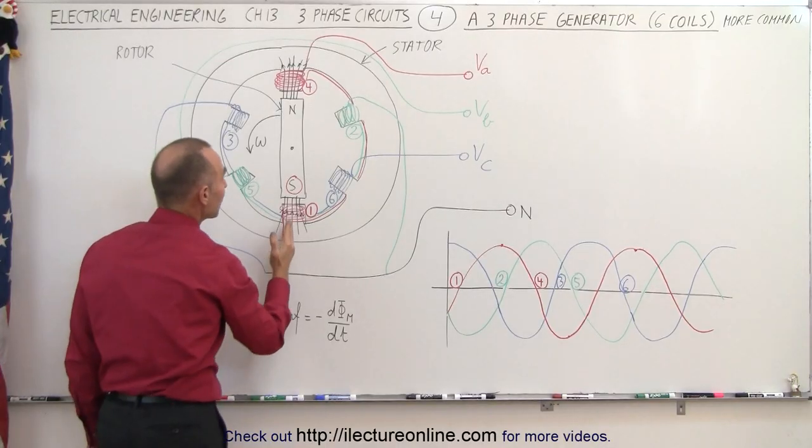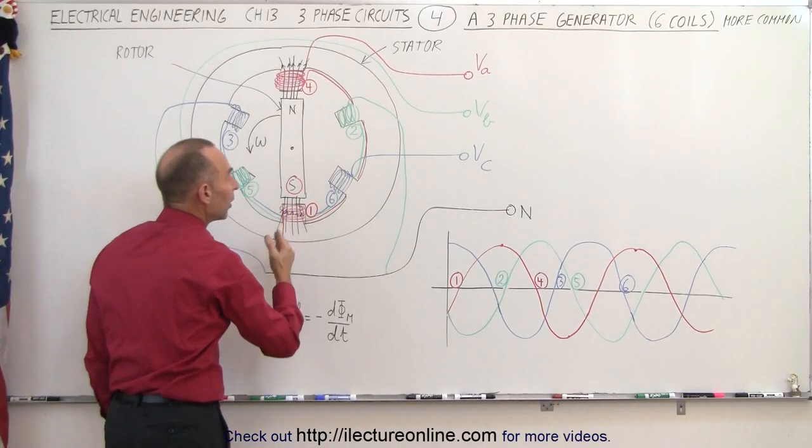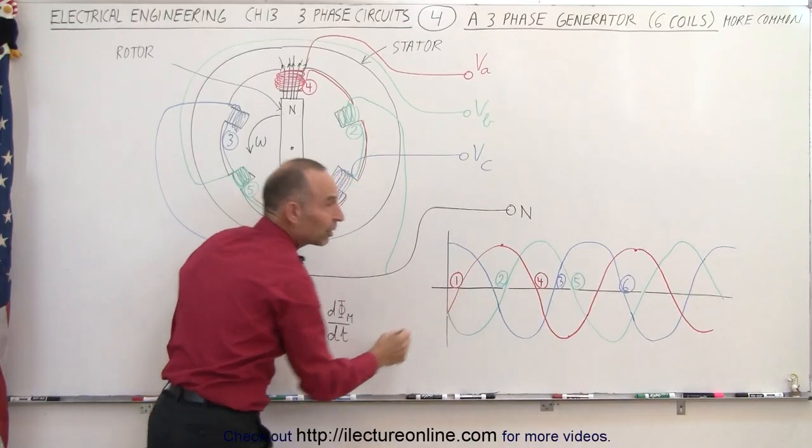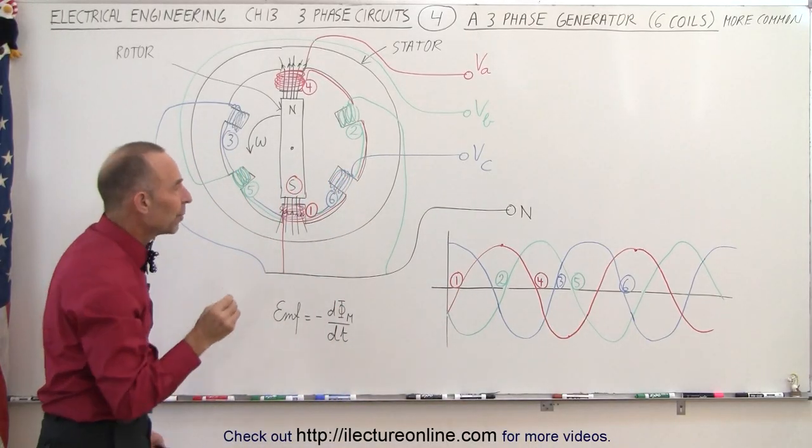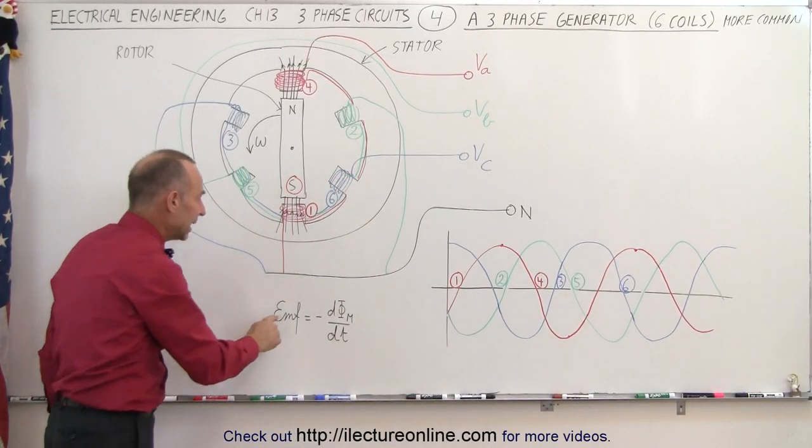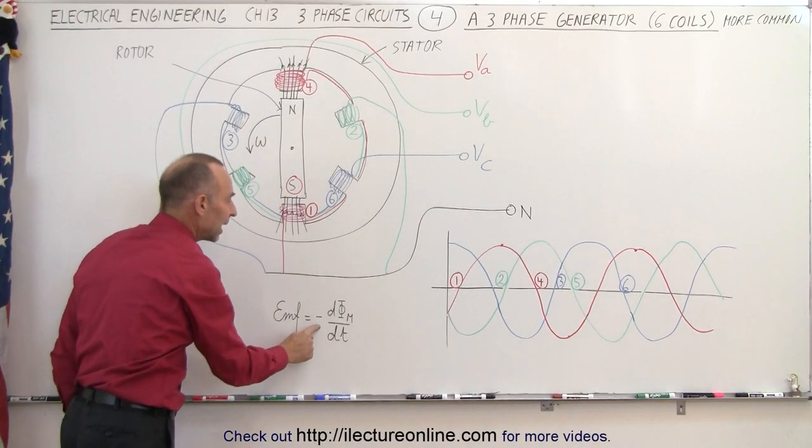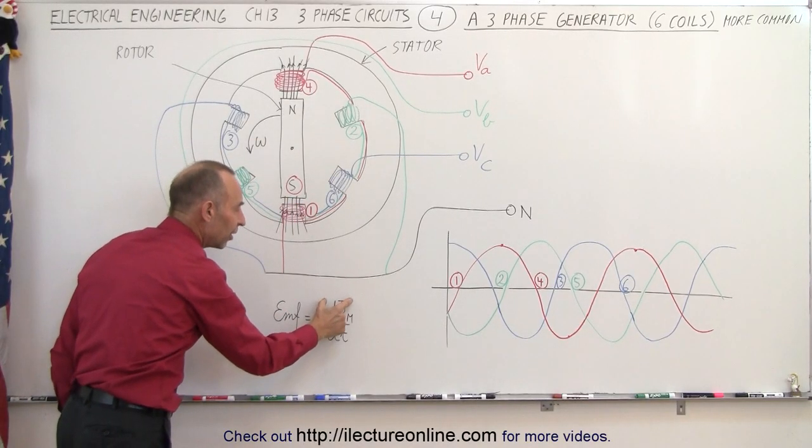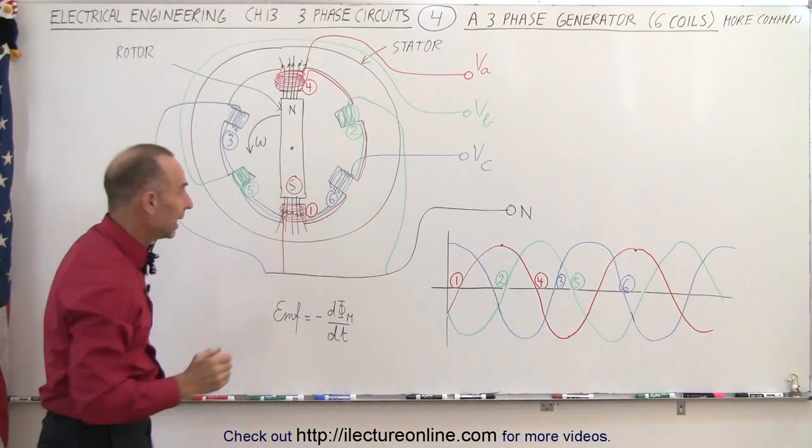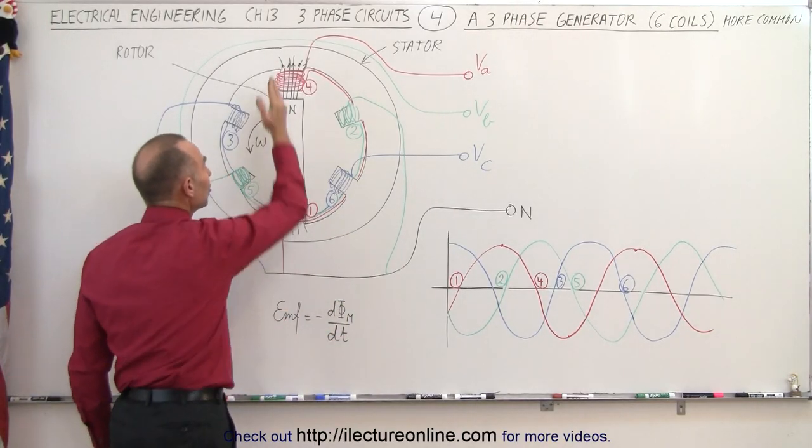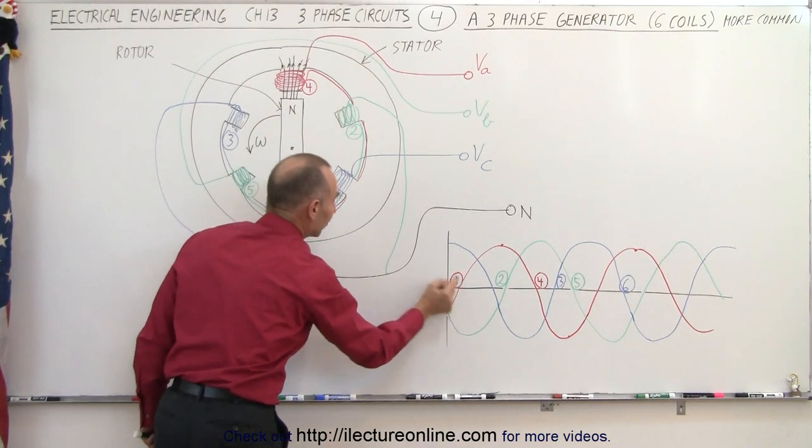Notice we have maximum flux going through the coil, but the voltage at that point is zero, because the change in the flux at that very moment in time is equal to zero. The EMF produced by a rotor like this is equal to the negative of the change in the magnetic flux going through the coil as a function of time. And at this very moment, the change is zero, therefore the voltage will be zero.